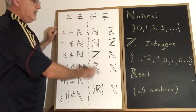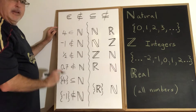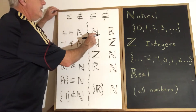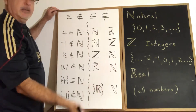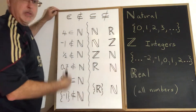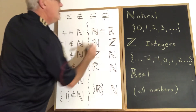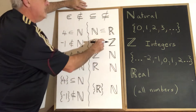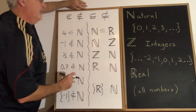Now we get to a bunch of statements where what's on the left isn't an element — it's a set. Is the set of natural numbers a subset of real numbers? Yes, it is — all the natural numbers are included in the bigger set of real numbers. So natural numbers is a subset of real numbers. Similarly, natural numbers is a subset of integers because all natural numbers are included in the set of integers.